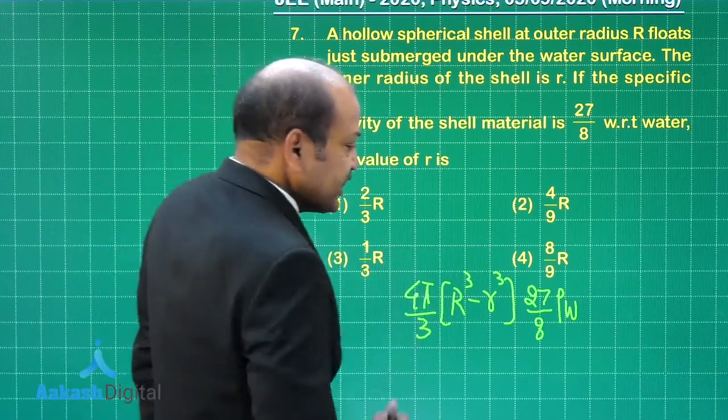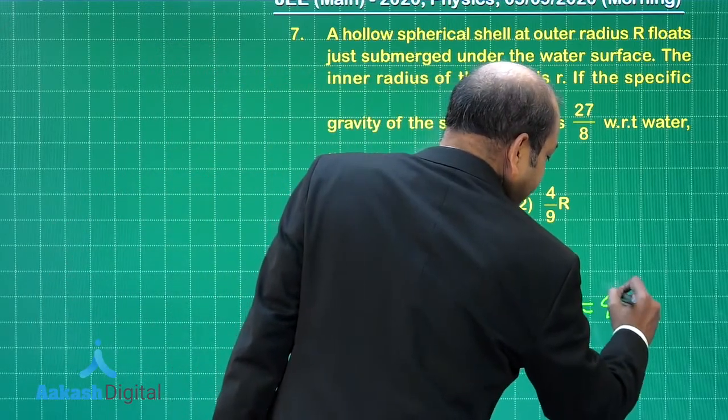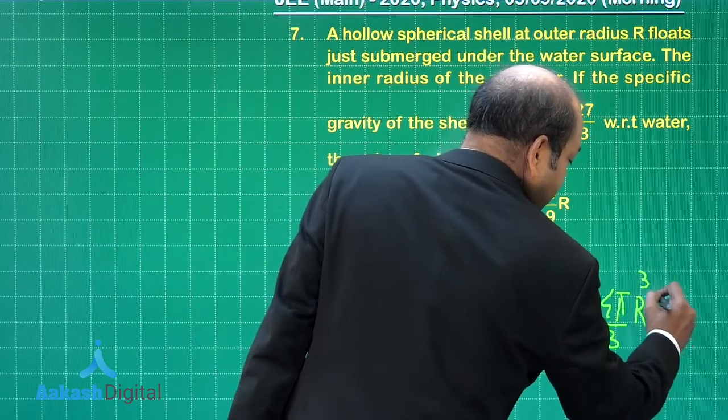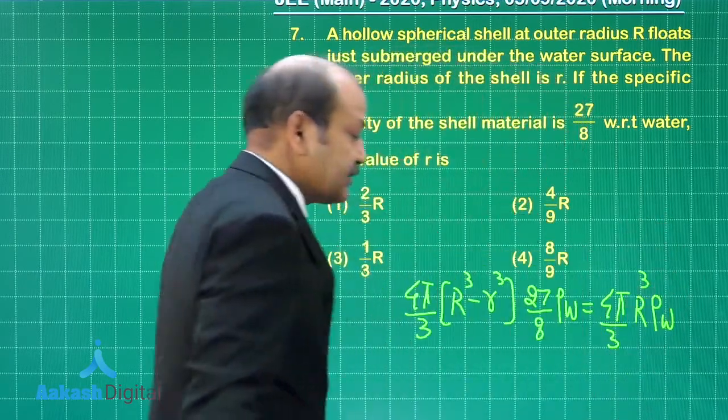The mass of water displaced is equal to the volume defined by the outer radius of the shell, that means 4π by 3 into capital R cube. So we equate this to 4π by 3 into capital R cube into density of water. ρw stands for density of water.